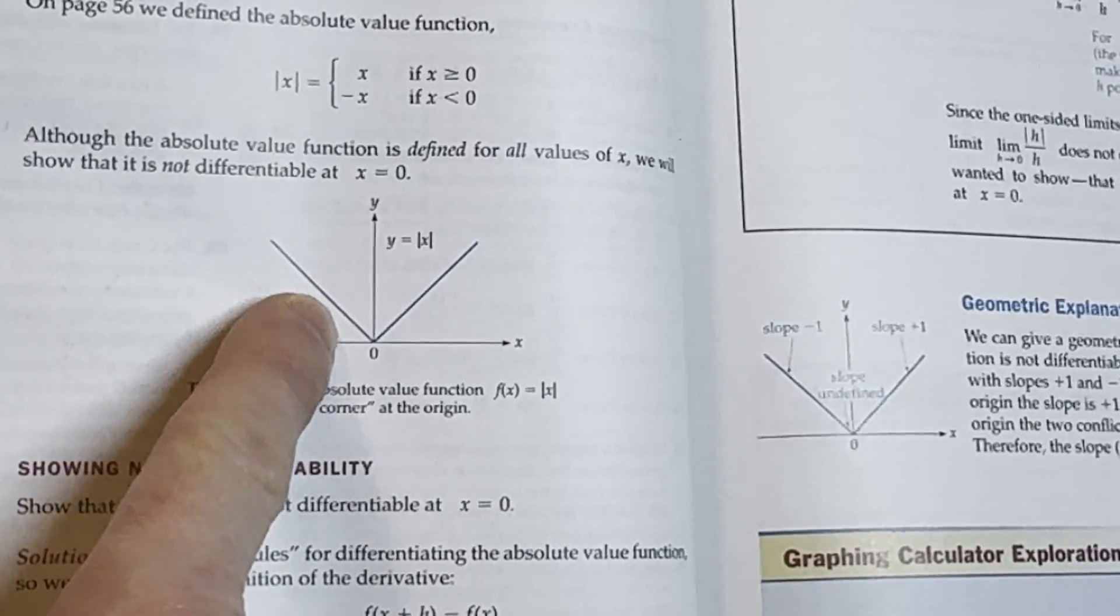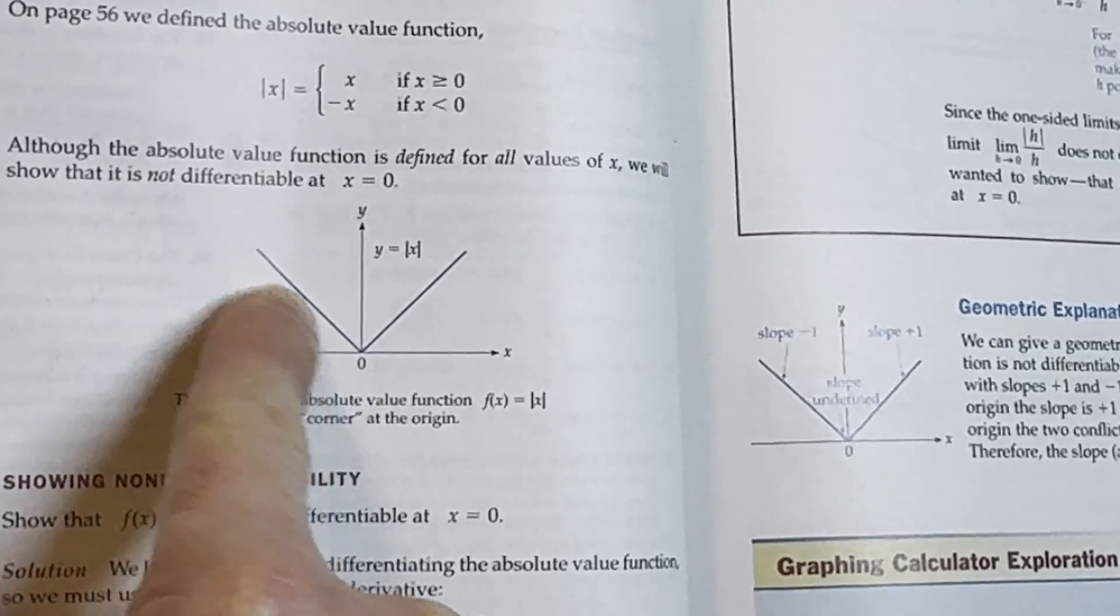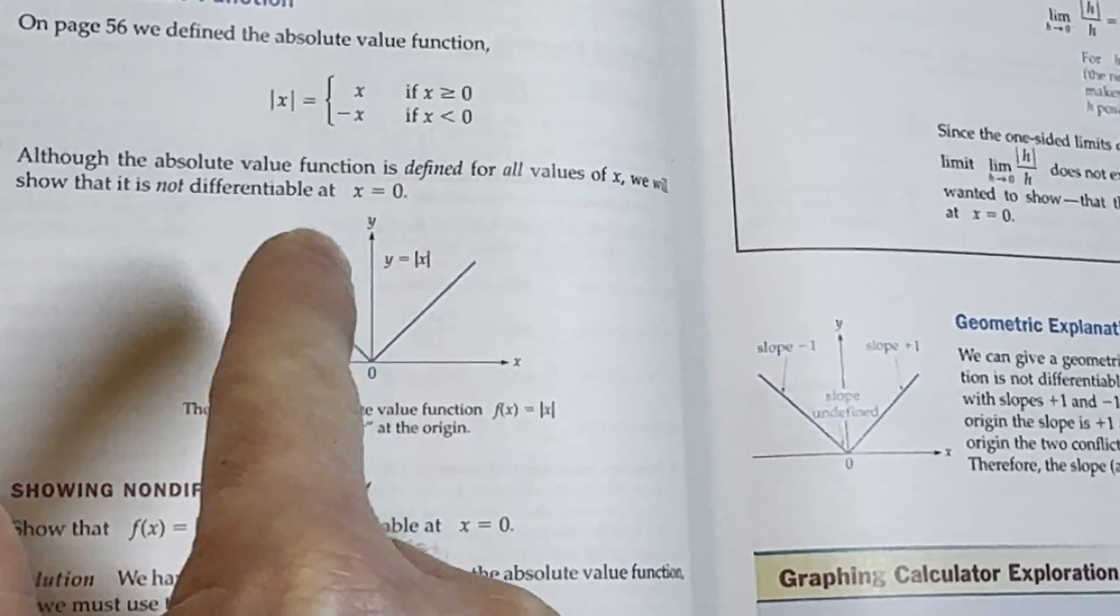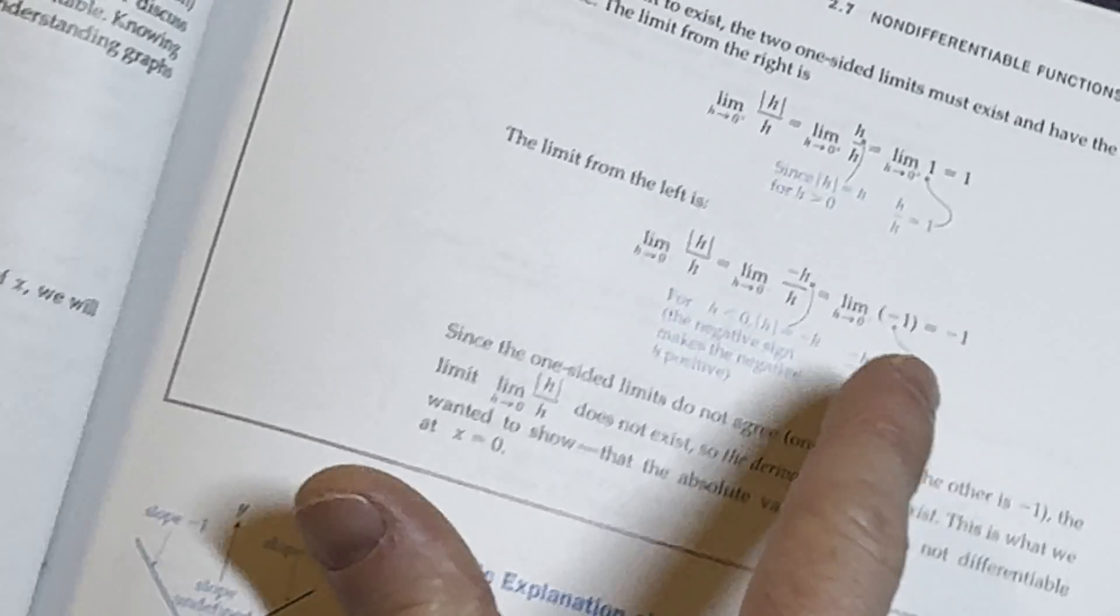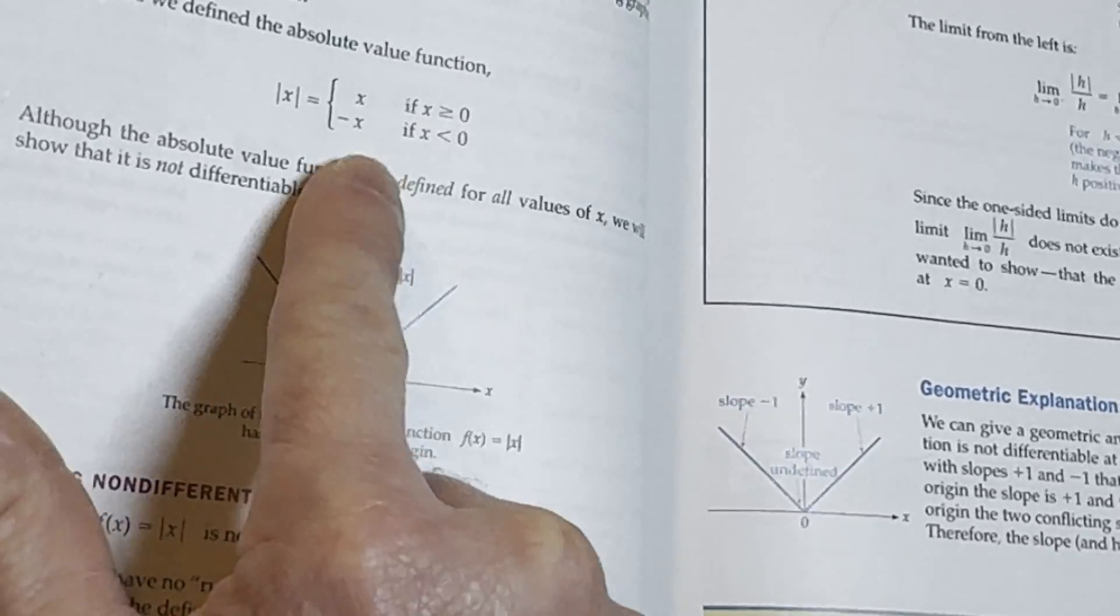So that's, it's going to approach that line. So the slope of that line is negative 1. So you're going to end up getting negative 1. And when you approach it from the right, that's just the line y equals x. As you see here, it's defined as a piecewise function. It's just x.